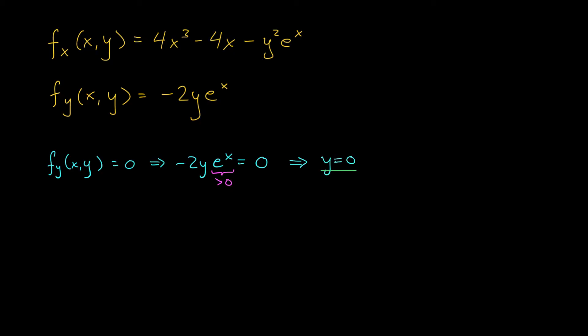All right. Well, let's use that valuable piece of information to solve the first equation. We know that y is zero. So if fx is equal to zero, it means that 4x cubed minus 4x is equal to zero. This gross term at the end disappeared.